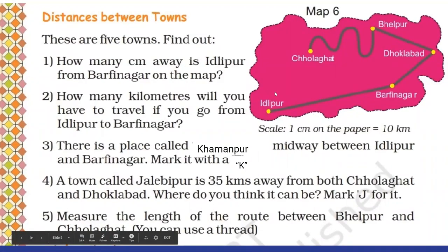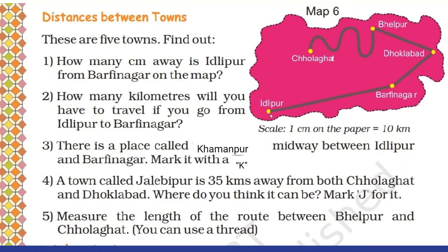Now some more questions based on map number six. Question one: how many centimeters away is Idlipur from Barfinagar on the map? Barfinagar is here and Idlipur is here. We can use a scale to measure the length of the line segment from Idlipur to Barfinagar. If you measure with the scale, you will get five centimeters. So the distance from Idlipur to Barfinagar on the map is five centimeters.